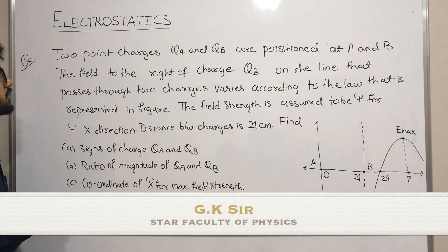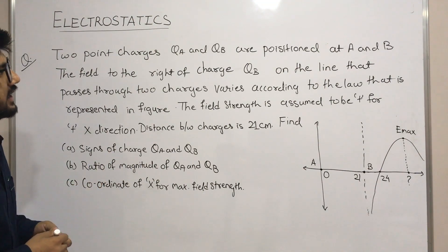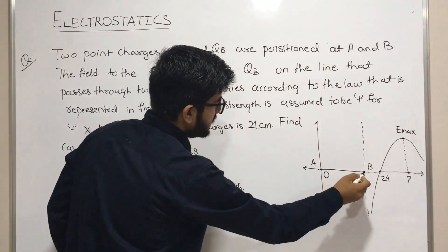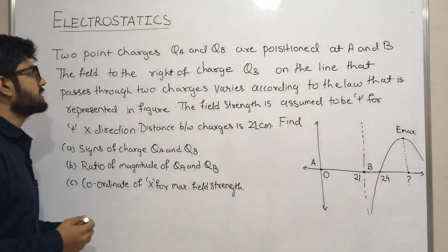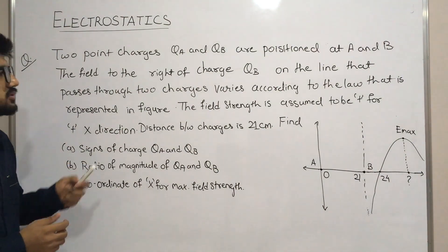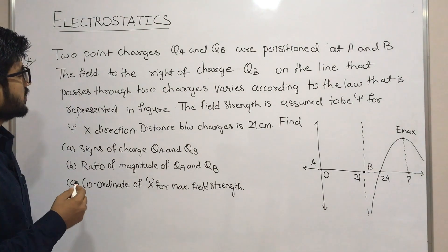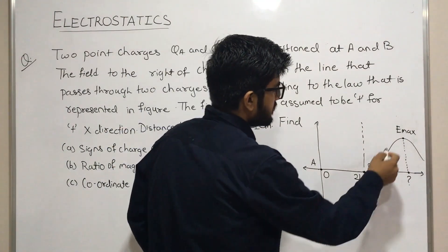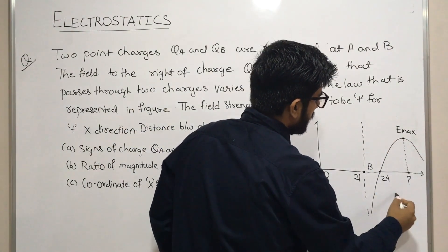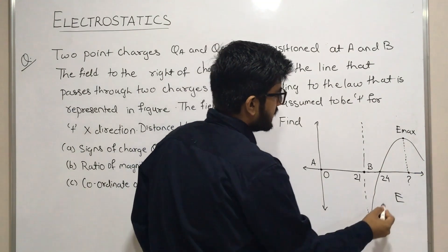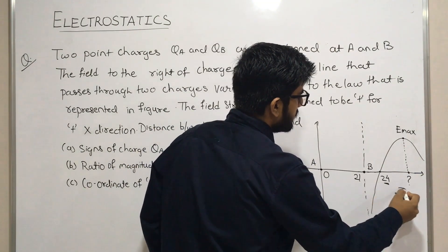Now let's take this question. Two point charges qa and qb are positioned at a and b, so here is a point charge and here is a point charge. We have given the field to the right of charge qb on the line that passes through two charges, varying according to the law represented in the figure. This diagram is our electric field diagram.